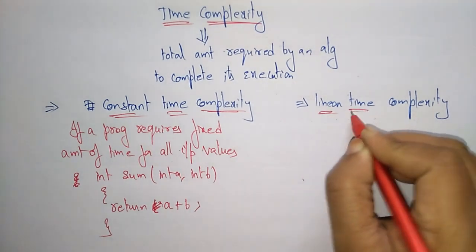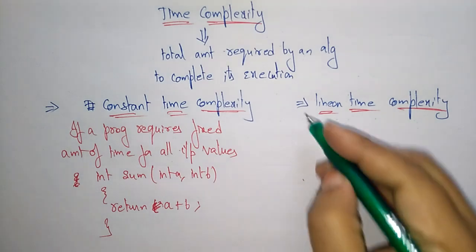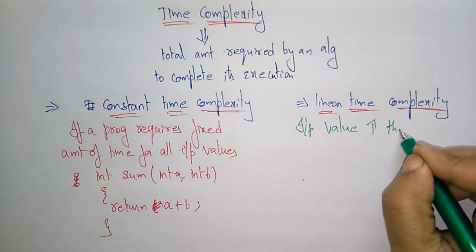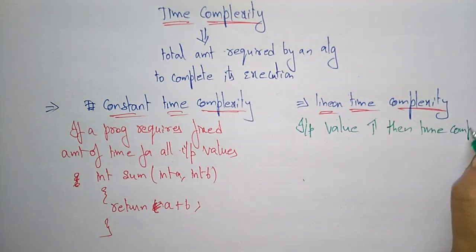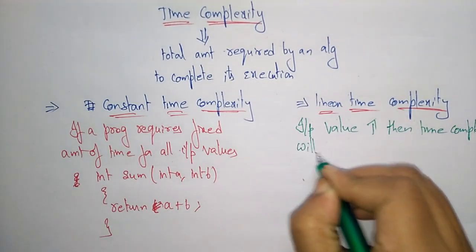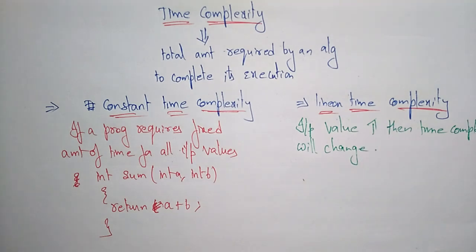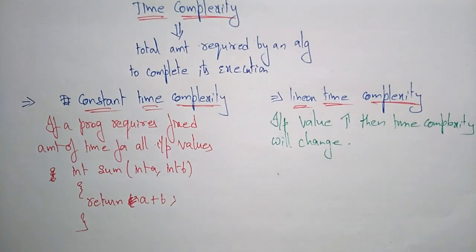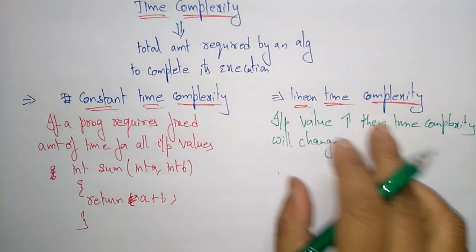Now coming to linear time complexity: if the input values are increasing, meaning you are using more input values, then the time complexity changes. Just like in space complexity where more values occupy more space, here also whenever the input values increase or more steps are used to calculate the problem, the time complexity increases — that is linear time complexity.